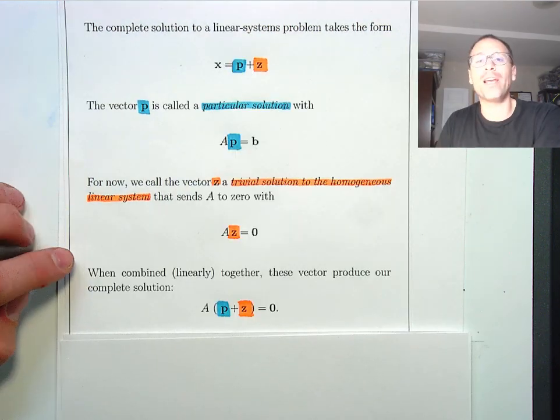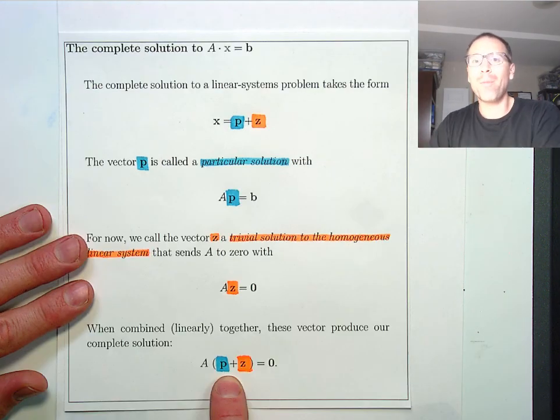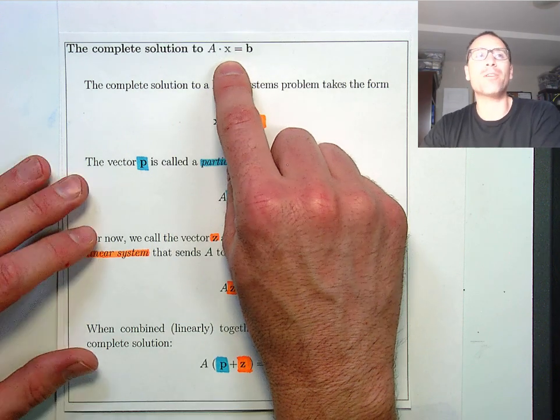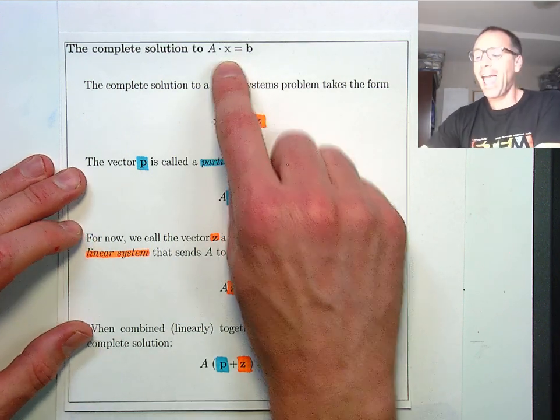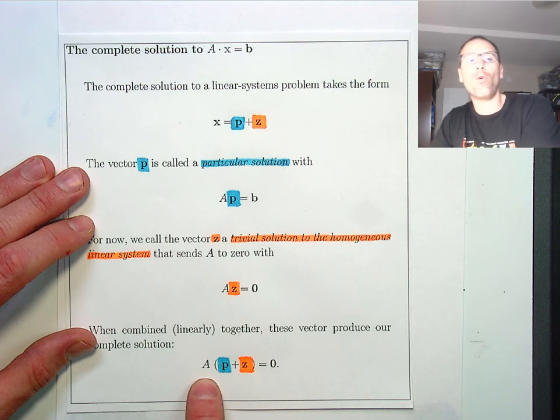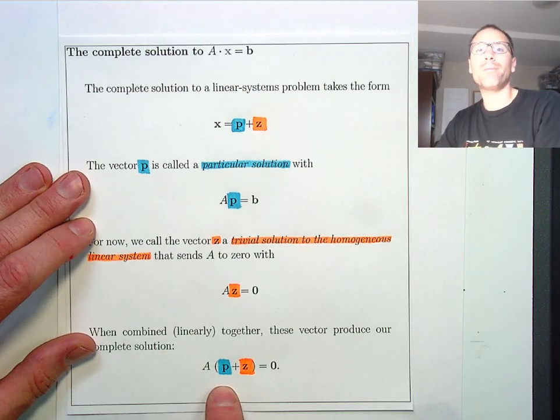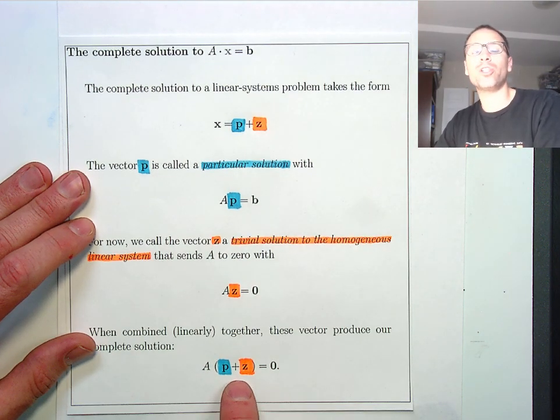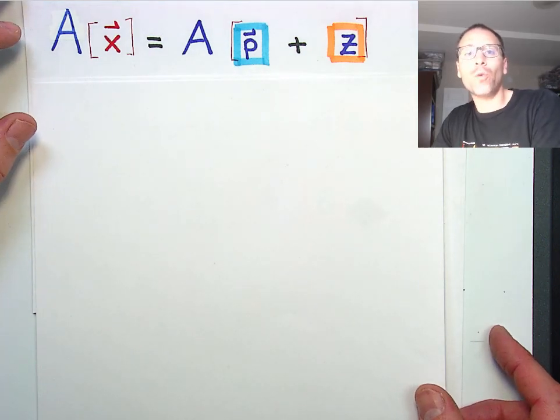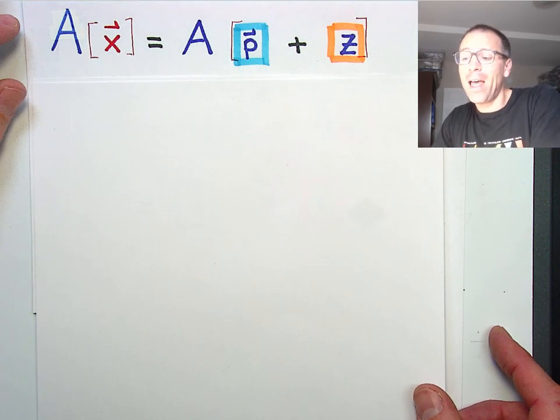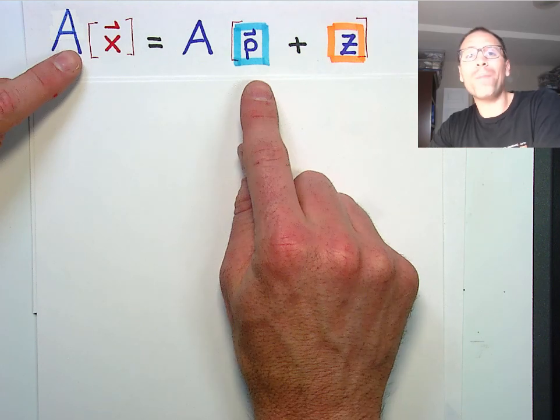There's a bunch of formal language that we're going to dissect later in this lesson. But remember, in order to completely describe the solution to a linear systems problem, every solution is going to take this form, a particular solution plus a zero solution to that system. Before we dive into some examples to show that you already actually know this, let's go ahead and take a look at what this means.